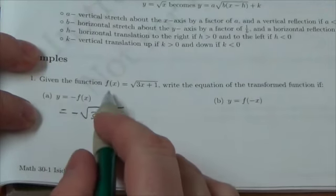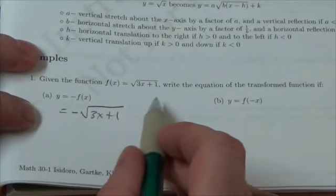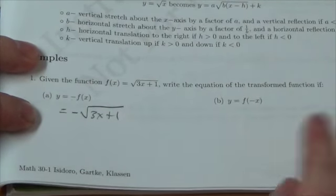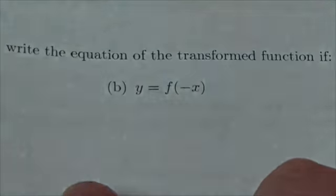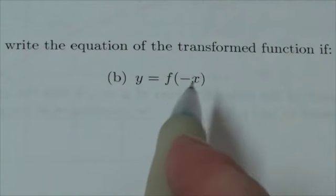The first question is, given the function f of x equals the square root of 3x plus 1, write the equation of the transformed function if... we're going to look at this second one here, so let's zoom in on this, if y equals f of negative x.